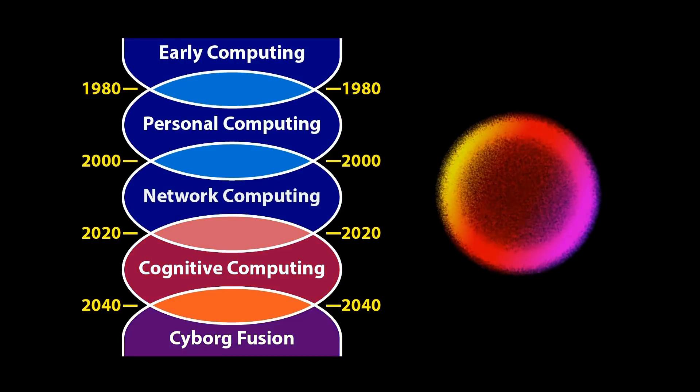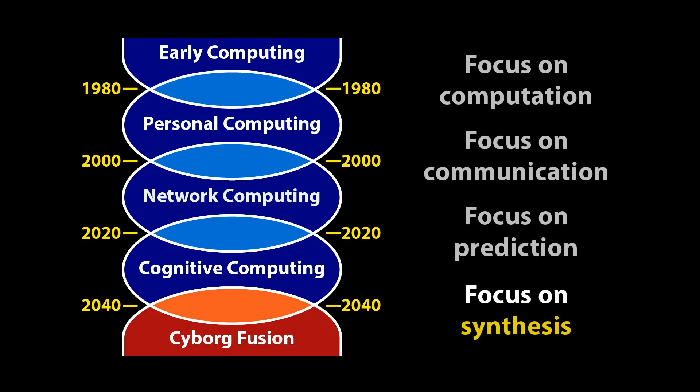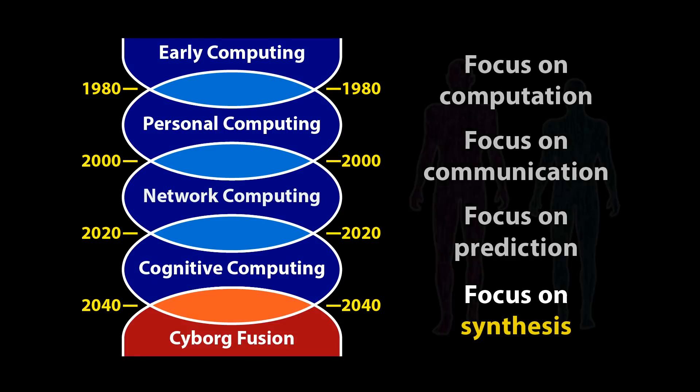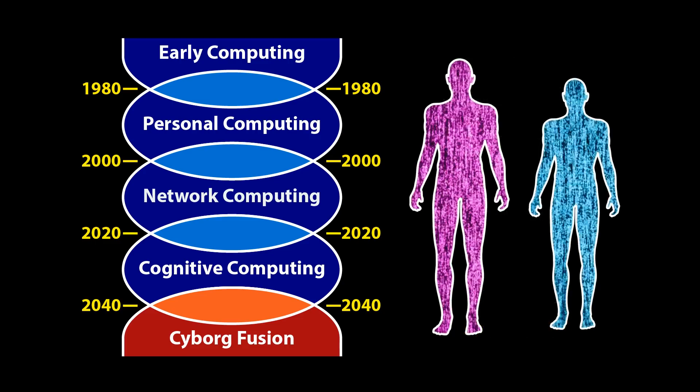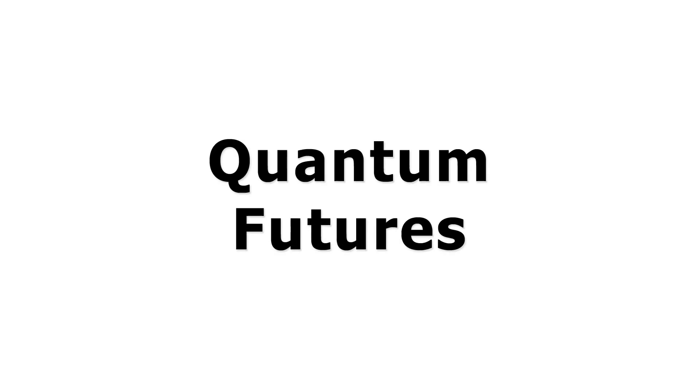Looking further ahead, the final computing age of cyborg fusion involves the physical synthesis of human beings and machines, and is likely to rely on quantum molecular simulation to assist in the redesign and proactive evolution of ourselves. Quantum molecular modelling is very different to most of today's computing applications, but the most revolutionary new technologies have always been used to achieve new things rather than to do old things in new ways. It's therefore reasonable to predict that most of tomorrow's quantum computers will spend most of their time executing quantum algorithms that most people today cannot even imagine.